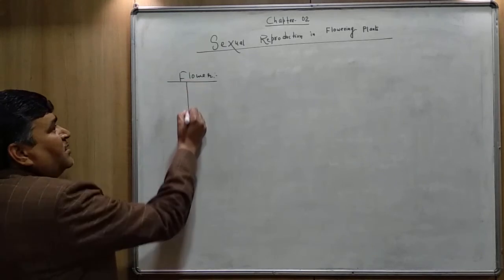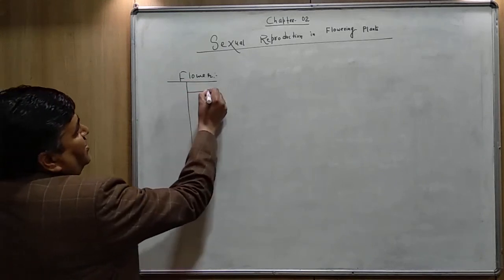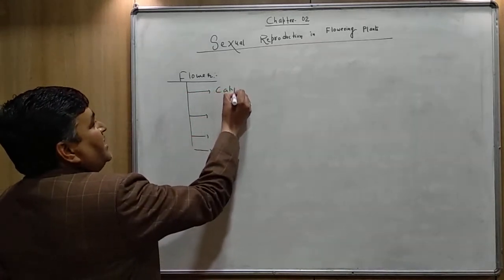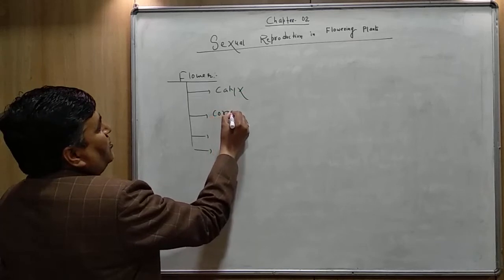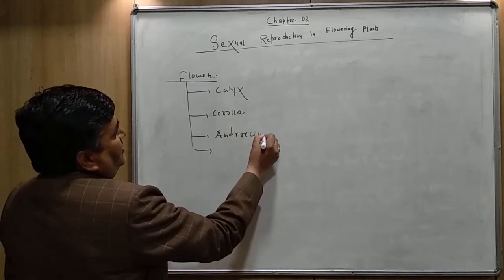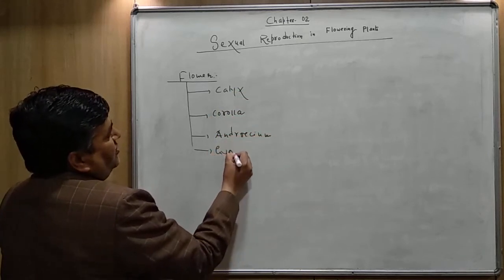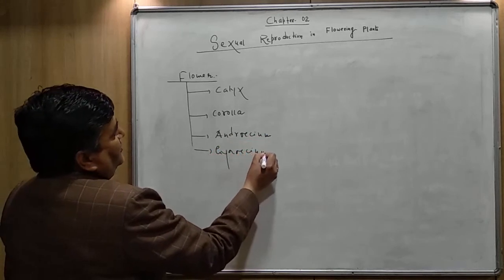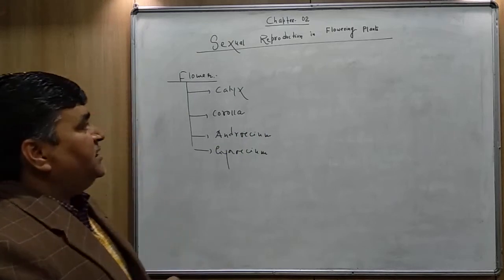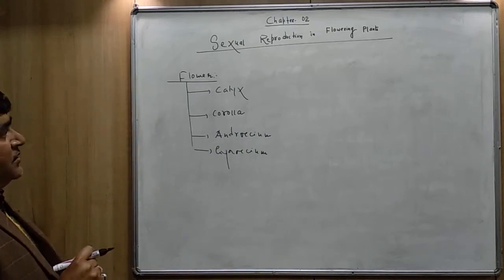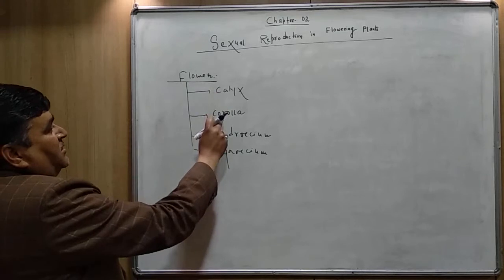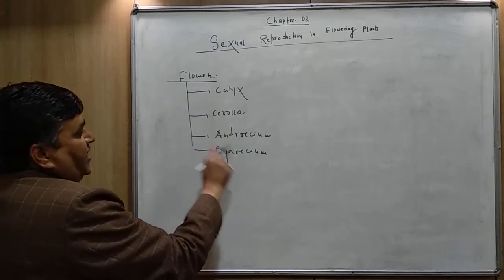Each flower consists of the following parts: calyx, corolla, androecium, and gynoecium. A bisexual flower, or a complete flower, is made up of these four parts — calyx, corolla, androecium, and gynoecium.